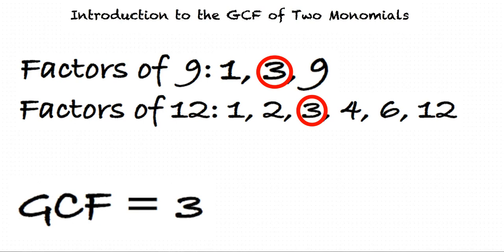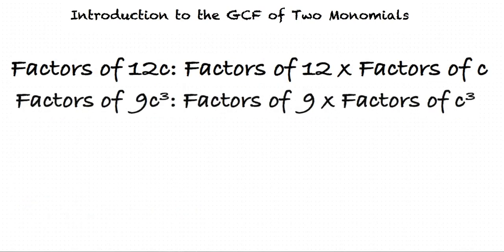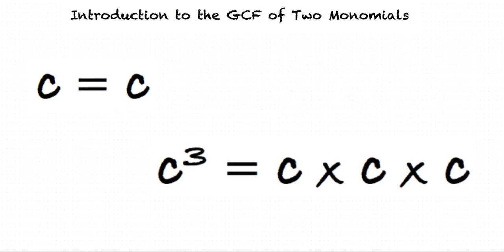Now, what if we were asked to find the greatest common factor of 12c and 9c raised to the third power? I'm not sure. How would we find the GCF of variables? Recall the rules of exponents. C equals c, and c to the third equals c times c times c.